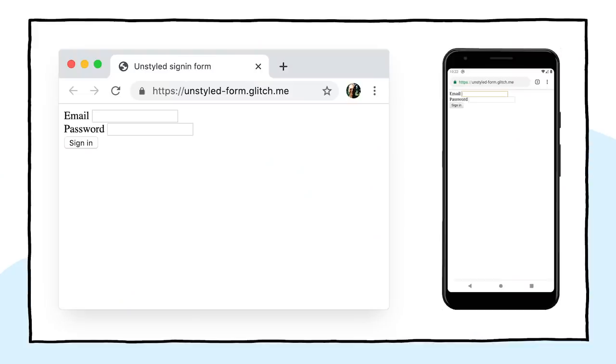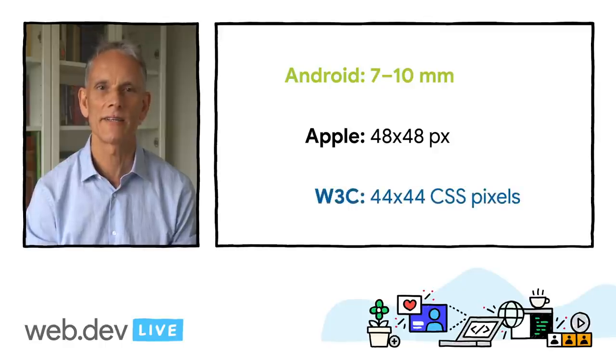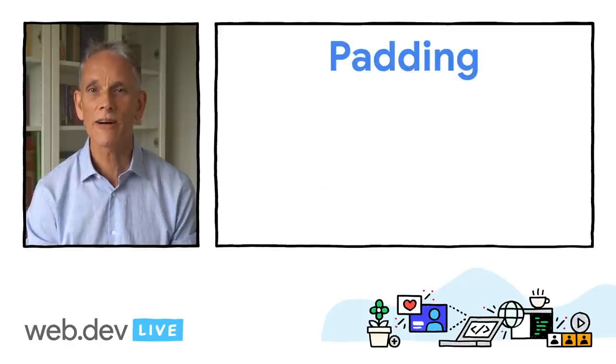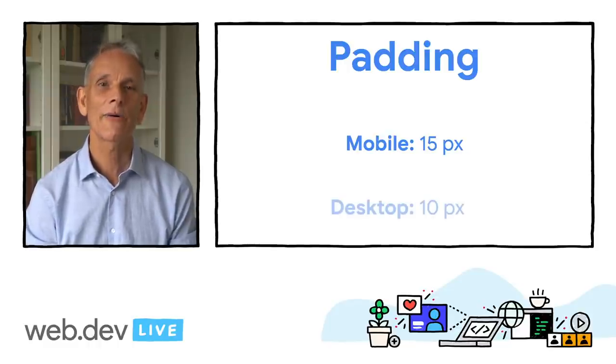That HTML code is all valid and correct, but the default browser styling means it looks terrible and it's hard to use, especially on mobile. The default browser size for just about everything to do with forms is too small, especially on mobile — this is a common problem with sign-in forms on lots of sites. The default size and padding for inputs and buttons is too small on desktop and even worse on mobile. I reckon you should add at least about 15 pixels of padding to input elements and buttons for mobile and around 10px on desktop. Try this out with real devices and real humans.